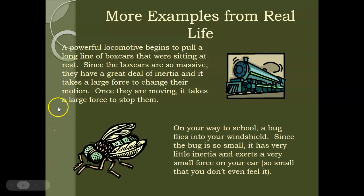And here's some more examples. So a powerful locomotive begins to pull a long line of boxcars that were sitting at rest. Since the boxcars are so massive, they have a great deal of inertia, and it takes a large force to change their motion. Once they are moving, it takes a large force to stop them. So the train is a pretty large force. It can pull a lot of weight. So we would need that train in order to pull the boxcars. Like you yourself would not be able to get those boxcars to move, but the train would be able to.